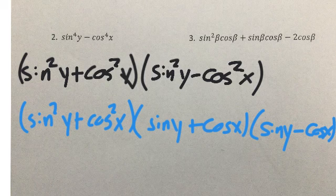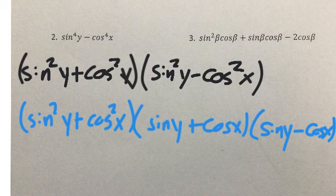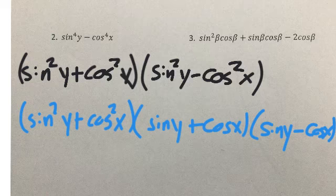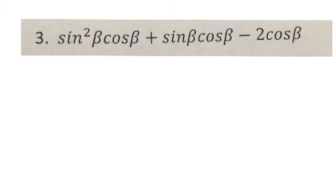So these, you're going to have some questions if you'll look at your homeworks. Some of them just say factor. That means we just want to factor. Don't think about any identities. So right here I'm looking at three. It's a trinomial three terms. Sine squared beta, cosine beta, plus sine beta, cosine beta, minus 2, cosine beta. First thing I notice, all three terms have a cosine beta in them.